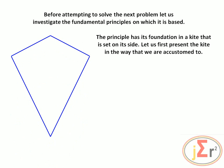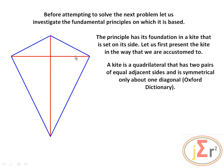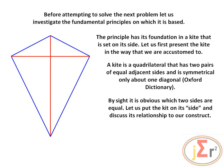We draw the kite first. According to the Oxford Dictionary, a kite is a quadrilateral with two pairs of equal adjacent sides, symmetrical only about one diagonal. We put in our two diagonals — one is the axis of symmetry and the other is not. We notice that the diagonals are at right angles to each other. Let us put the kite on its side and discuss the relationship to our construct, labeling it as triangle ABC.